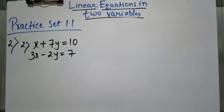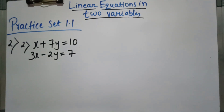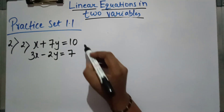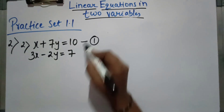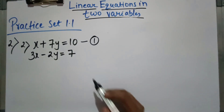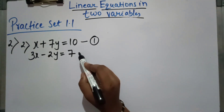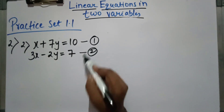Here again we are going to solve with the elimination method. The equations are: x plus 7y equal to 10, and 3x minus 2y equal to 7. The first step is equation numbering — I have given the first equation number 1, and this is the second equation.